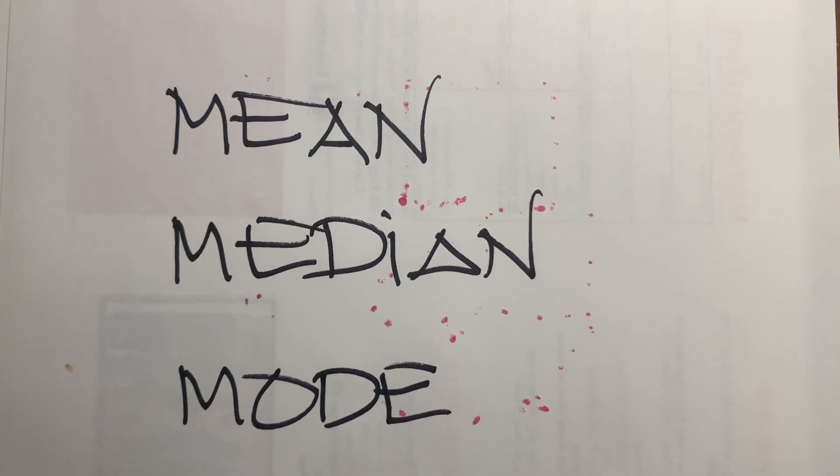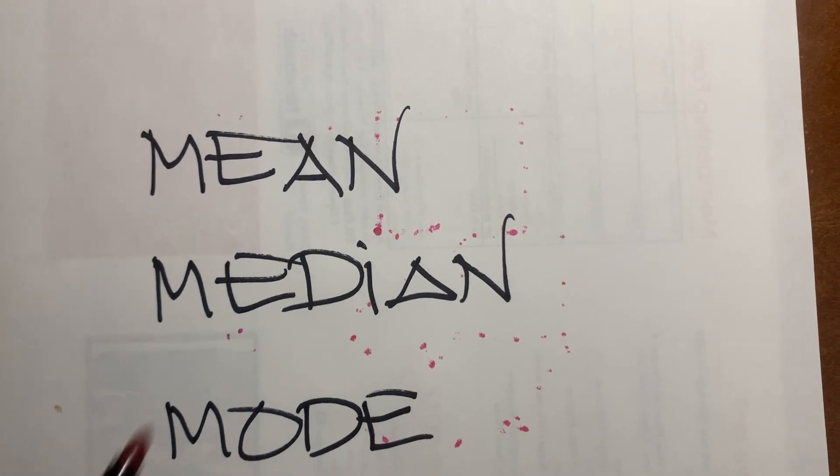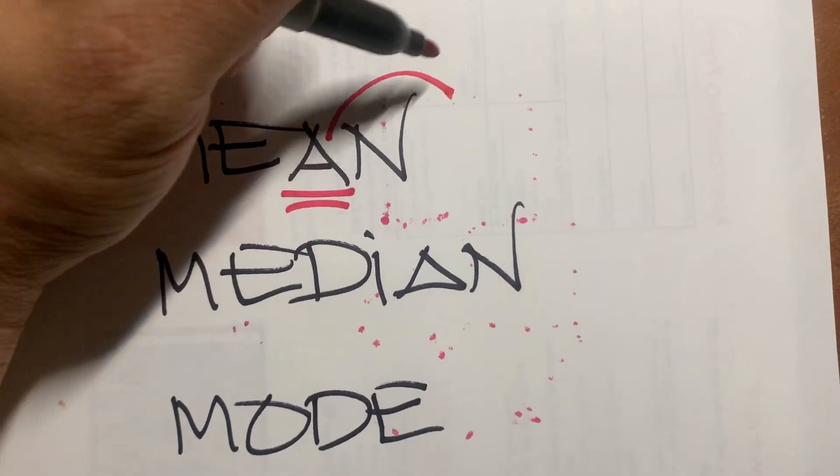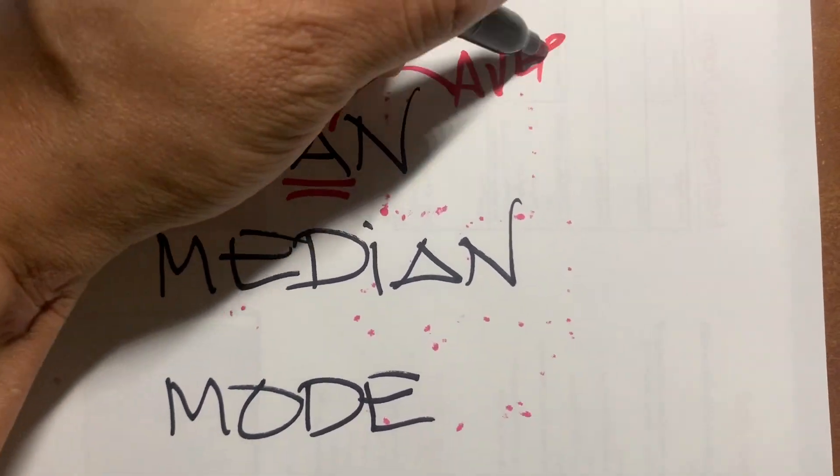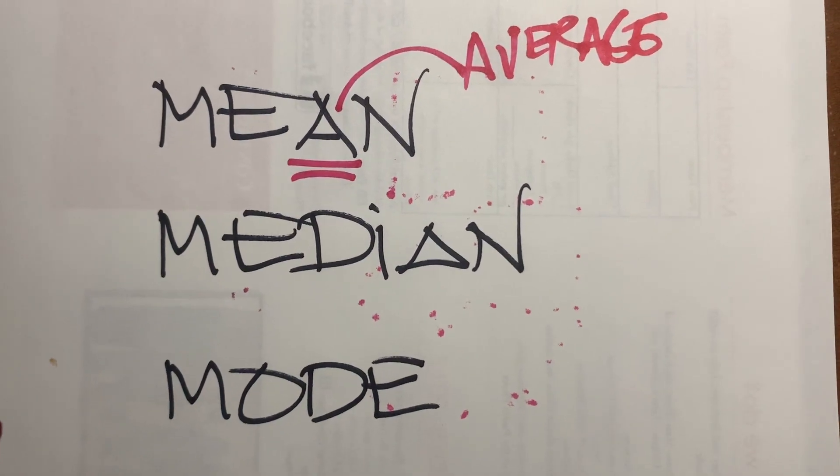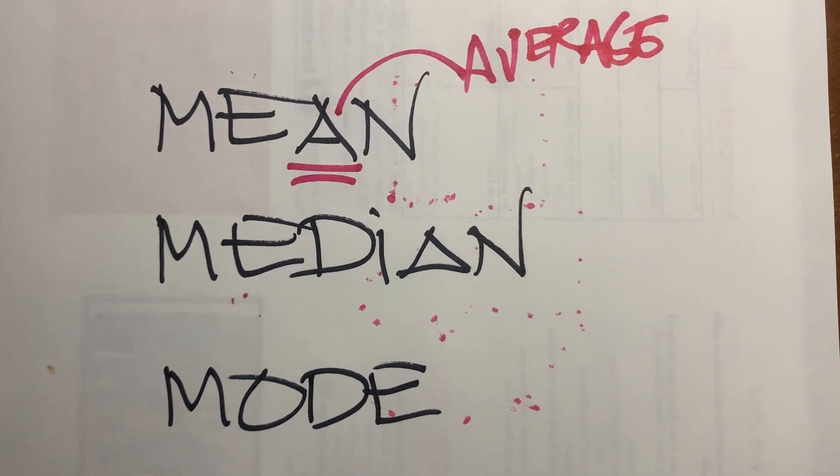Mean, median, and mode. Mean, remember, the A here means it's the average. And we know that you have to add and divide by the number of items.